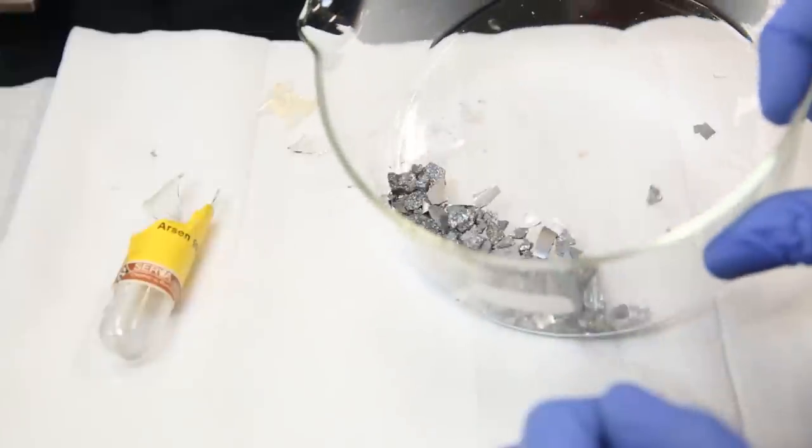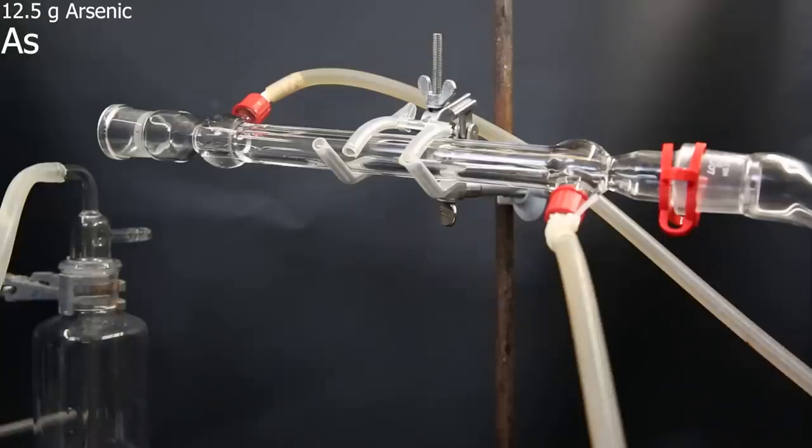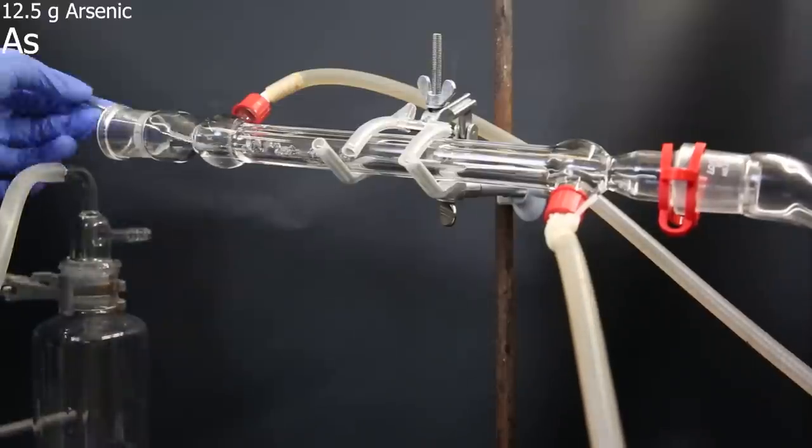Now that I have the shiny pieces of arsenic, I can set them up for chlorination. So with the spatula, I carefully add in 12.5 grams of the arsenic pieces into the condenser, and shove them inside.